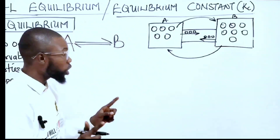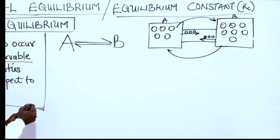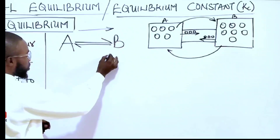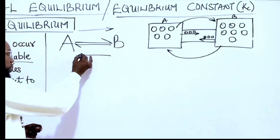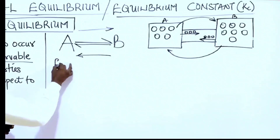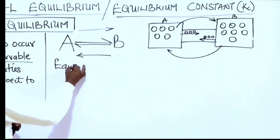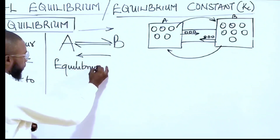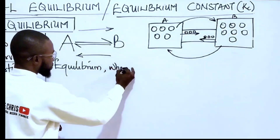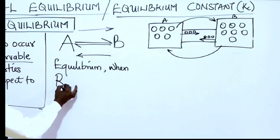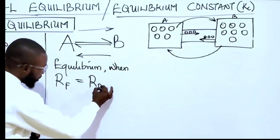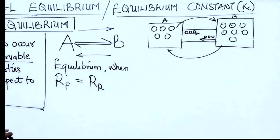What it totally means is that equilibrium will occur when the rate of the forward reaction is equal to the rate of the reverse reaction. That's when equilibrium will occur. Equilibrium occurs when the rate of forward reaction equals the rate of reverse reaction.